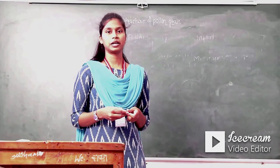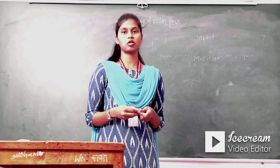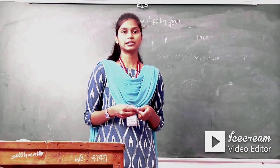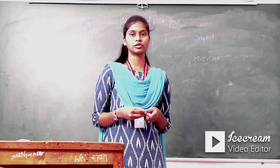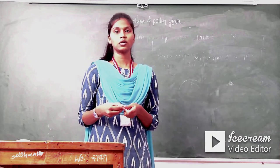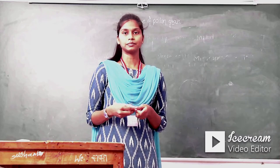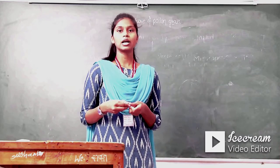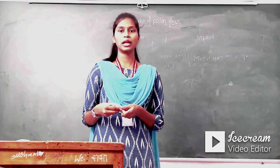Hello everyone, welcome in. In this lecture, we are discussing the structure of pollen grain — what is pollen grain, its detailed structure, and various layers of pollen grain. Pollen grain is also known as microspore, which is a haploid structure and very small in size. Pollen grain is also known as male gametophyte and it is considered as immature male gametophyte.